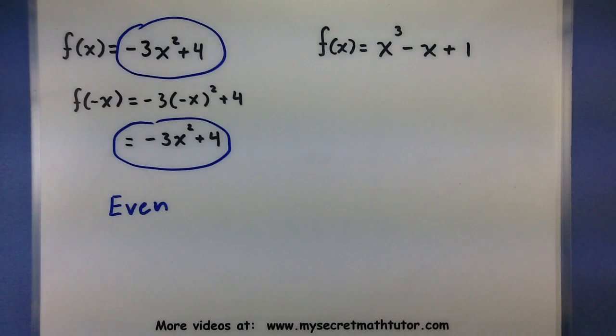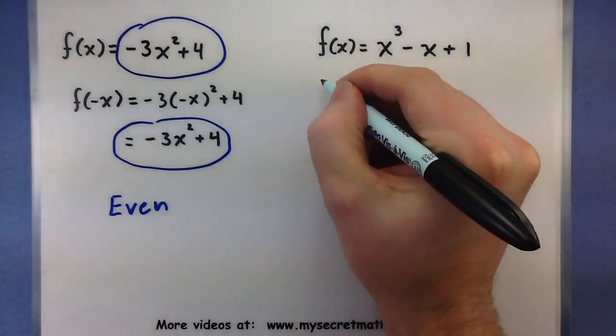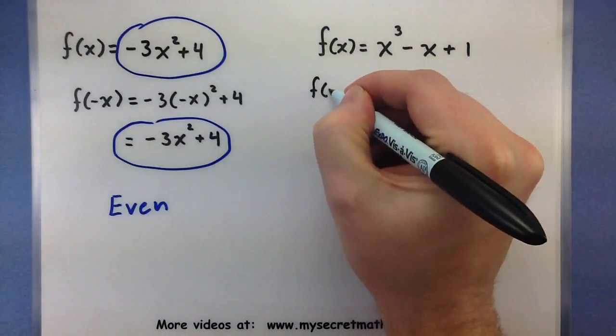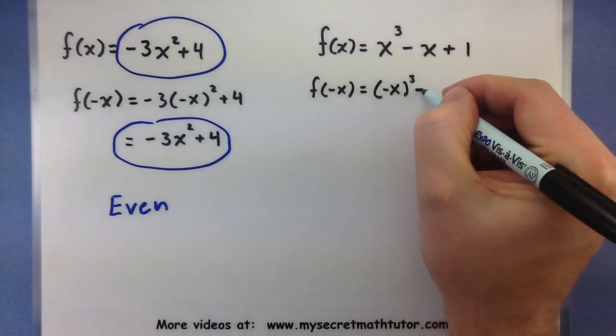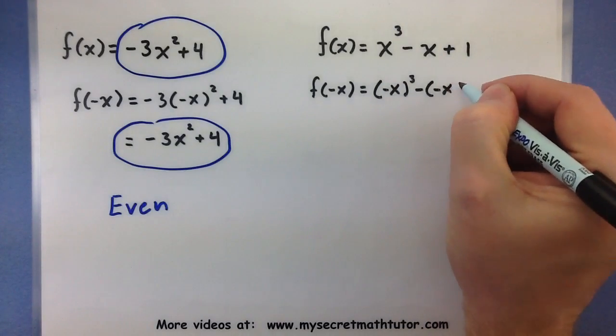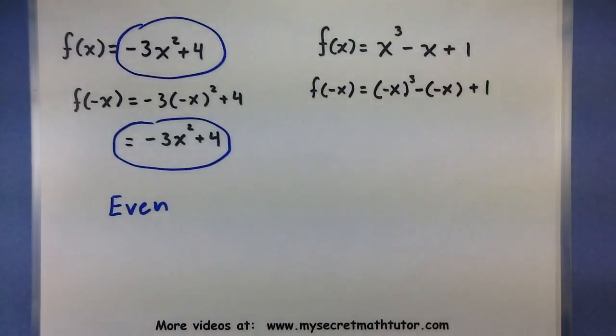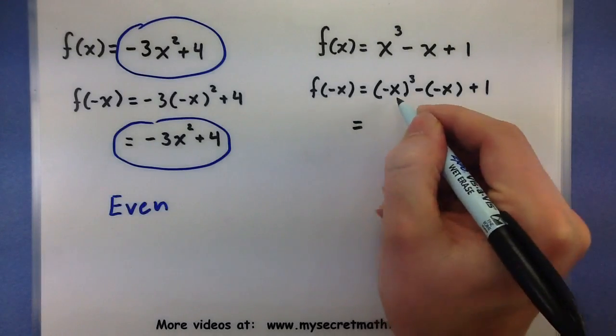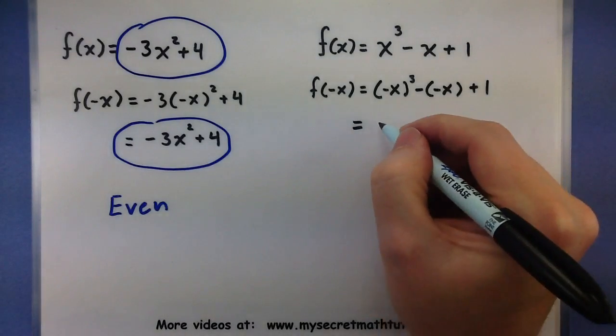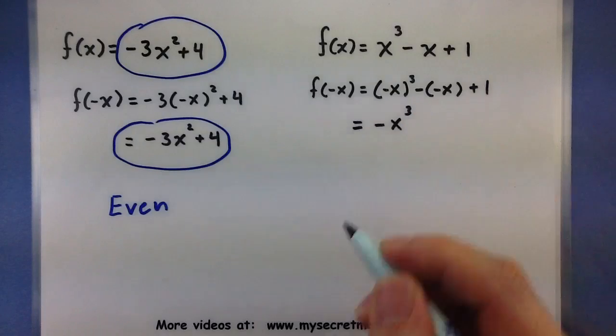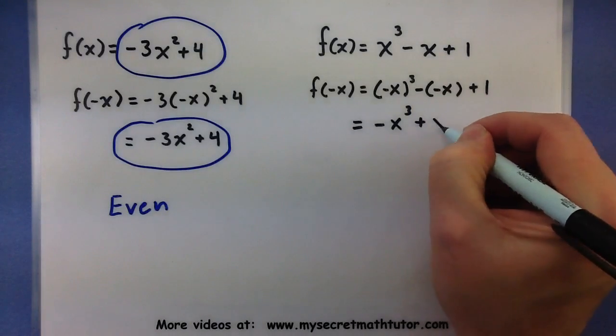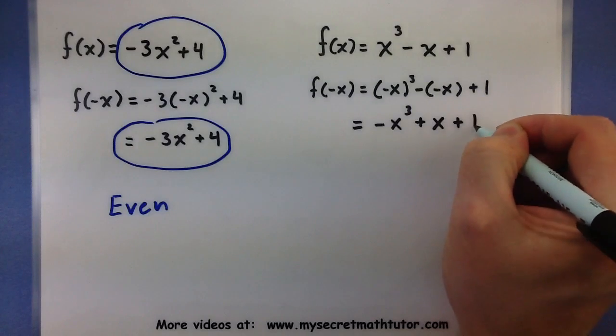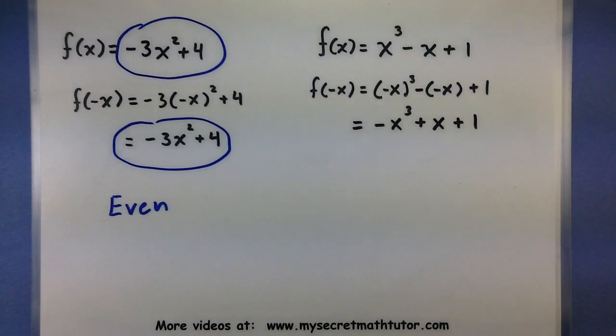Let's try and apply the test to this other function. We'll start off, plug in a negative x. All right, now let's go ahead and try and simplify this as much as possible, see what it looks like. So a negative x cubed is a negative x cubed. So the negative sign is really just moved up front. And a negative times a negative would be a positive plus 1.